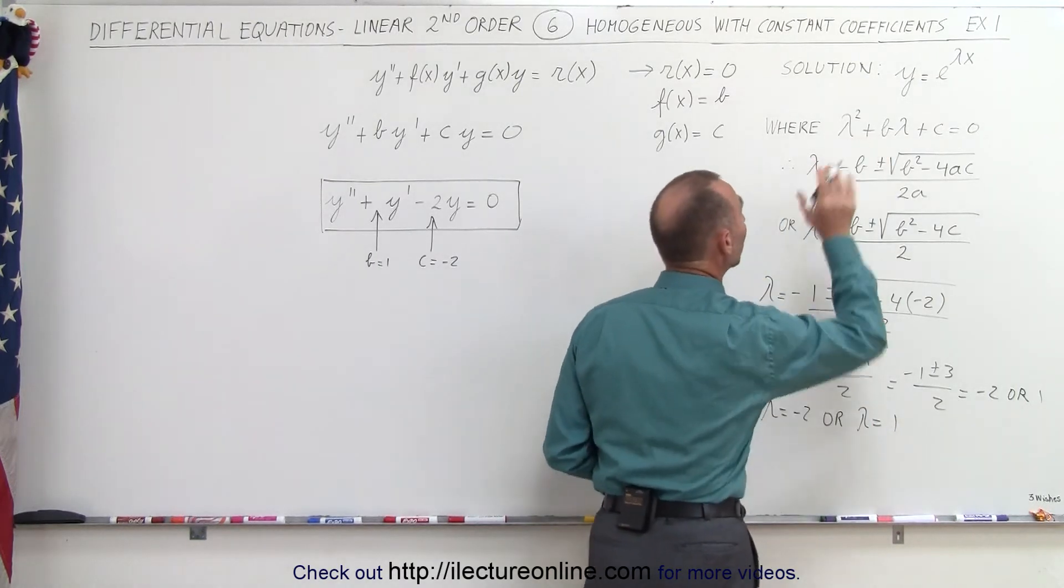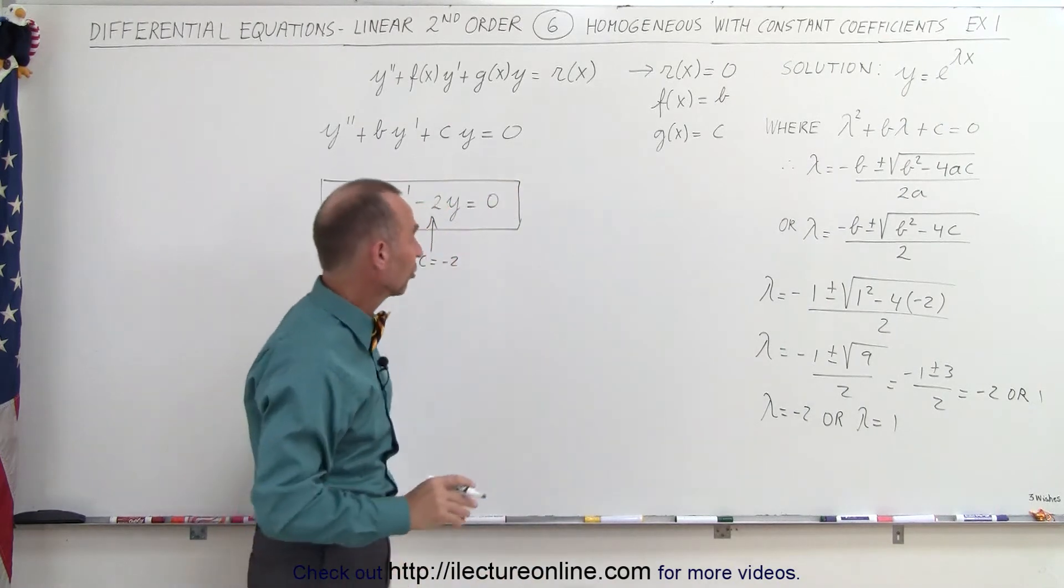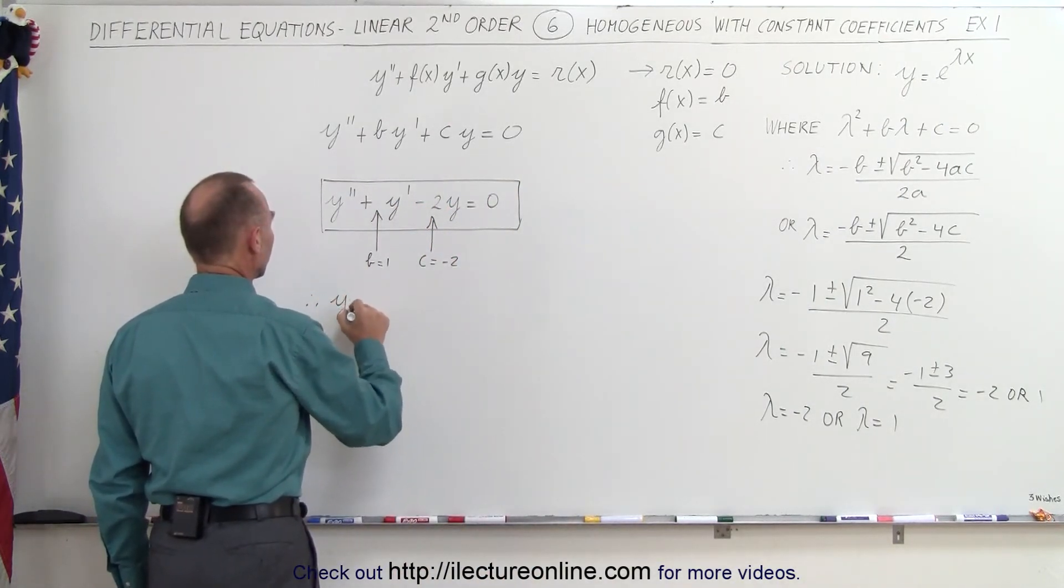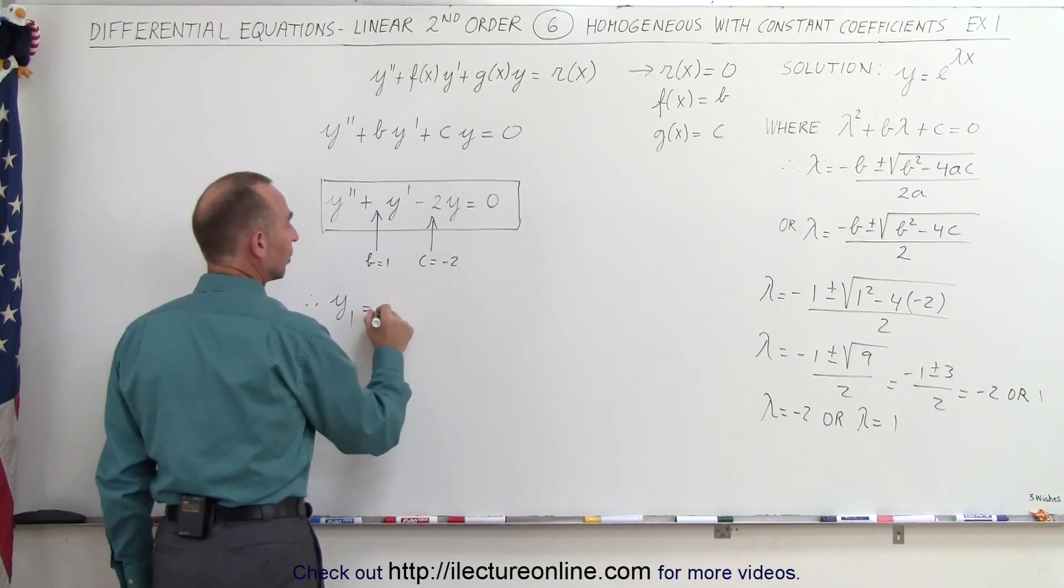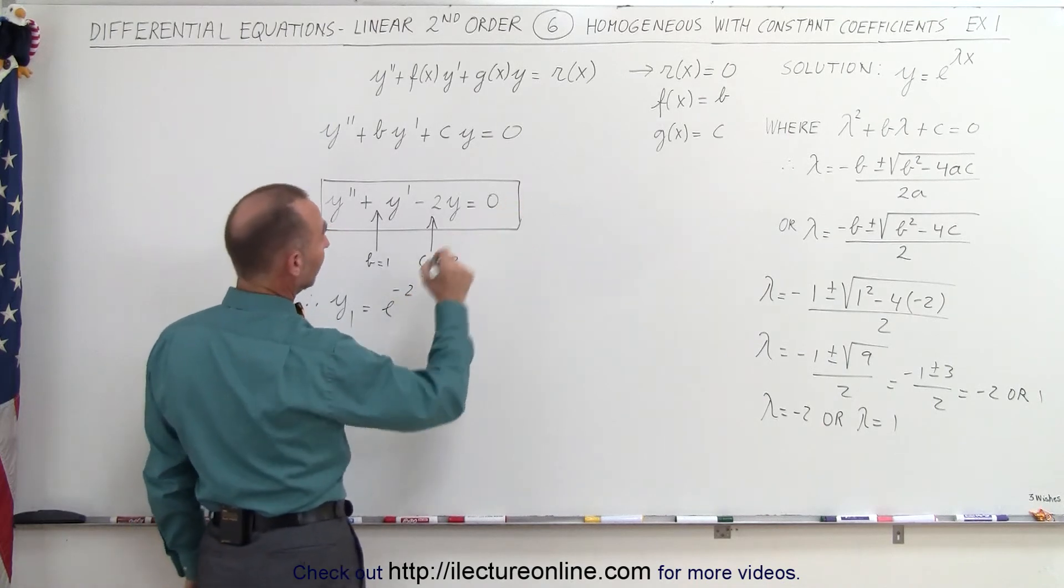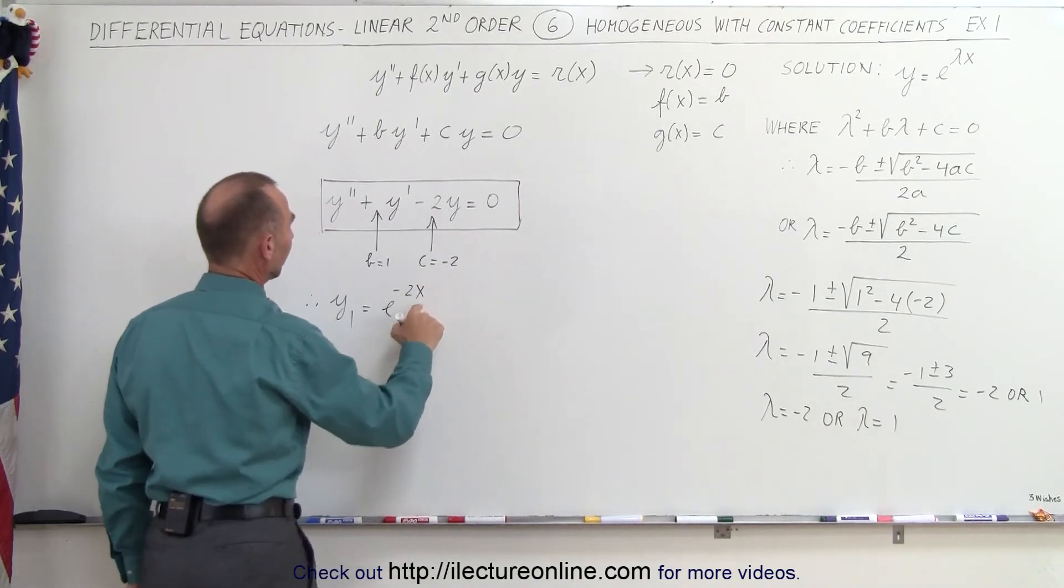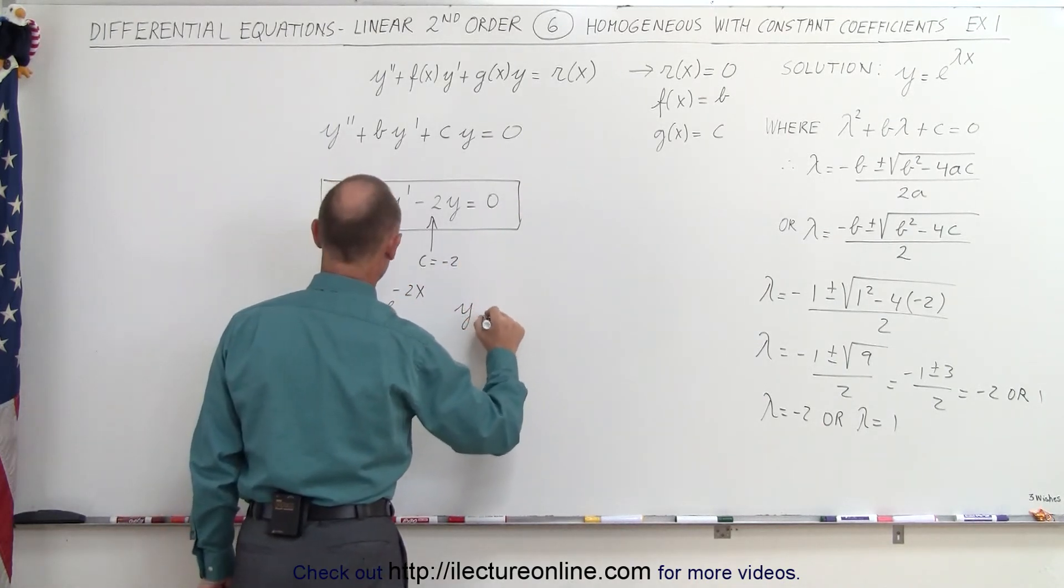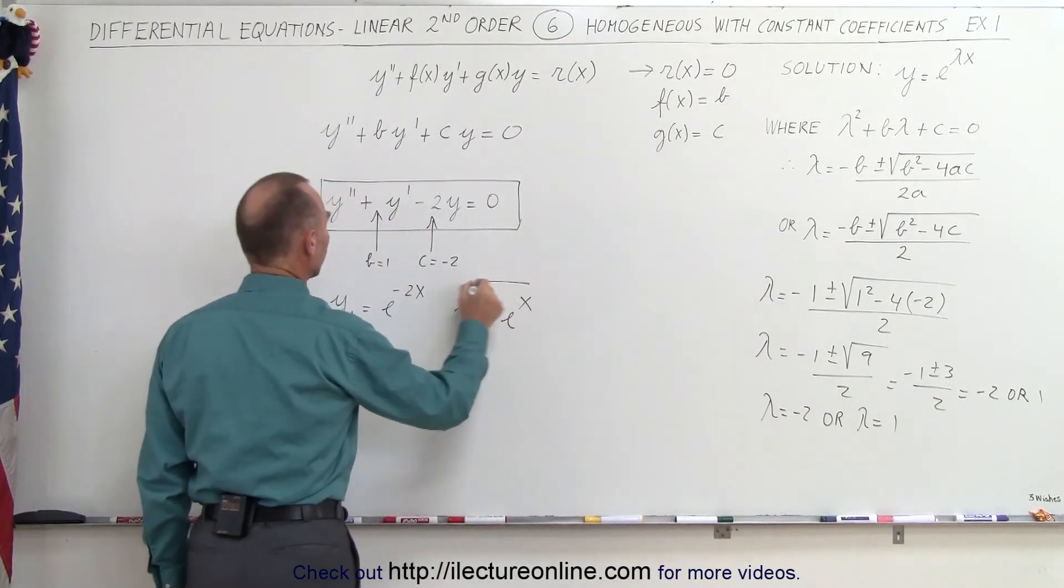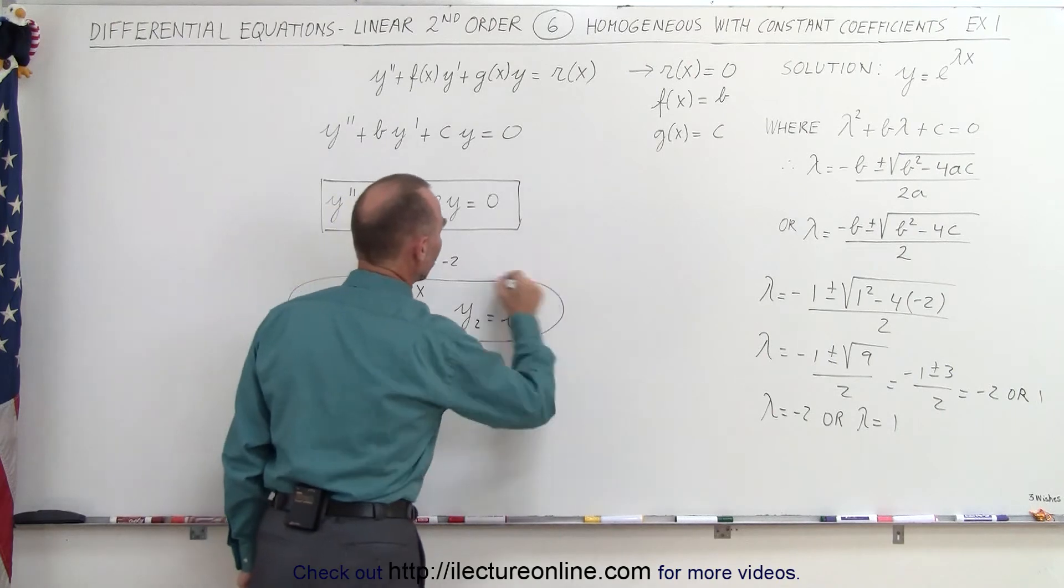That will give us the two possible solutions for the differential equation. So we can say that our first solution, y sub 1, is equal to e to the minus 2x, because our independent variable is x. And y2 equals e to the x. So these are the two solutions to this differential equation.